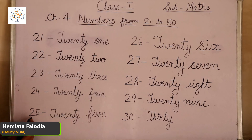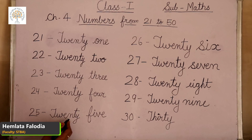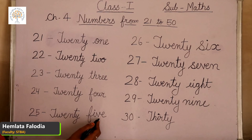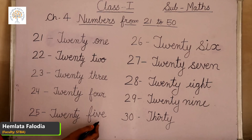Next, 25. T-W-E-N-T-Y, 20 and 5. F-I-V-E, 5. This is 25.